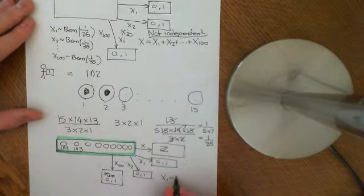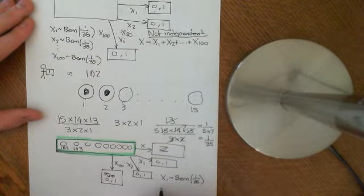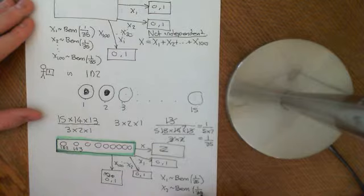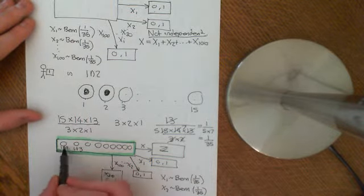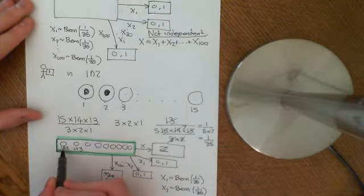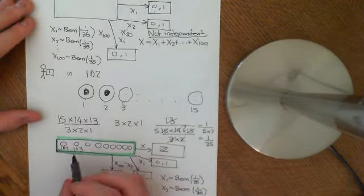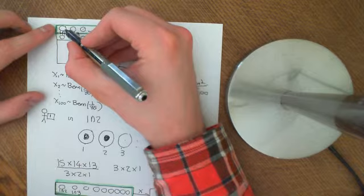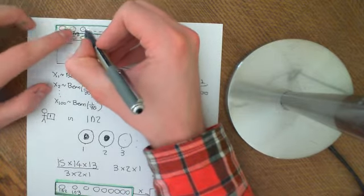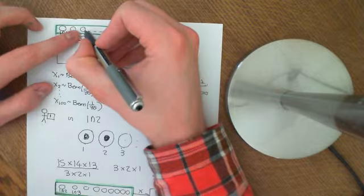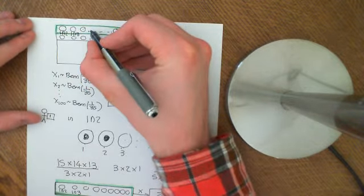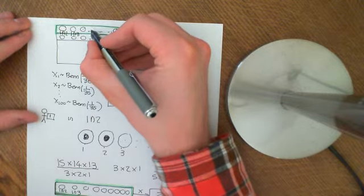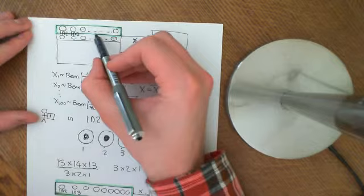So all of these random variables: X1 remains Bernoulli distributed with probability one over 35, X2 remains Bernoulli distributed with probability one over 35. Because in the original probability space, the probability of any given intersection having person one in it was one over 35, and you can go along and along and along.